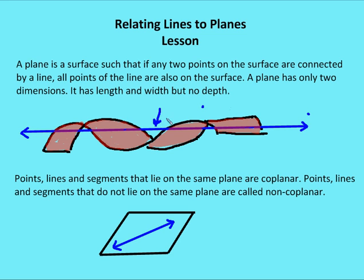An example of a plane where I have a line on the plane is shown below. I have plane M and line L. Line L lies on plane M, and the plane surface is such that if any two points in the surface are connected by line L, then all points of line L are also on the surface of plane M.